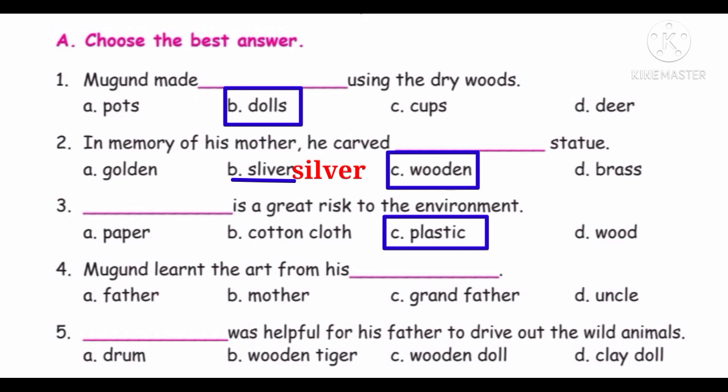Fourth question: Muhun learned the art from his dash. Options: Father, Mother, Grandfather, Uncle. Muhun learned the art from his grandfather — thata. The answer is grandfather. Muhun learned the art from his grandfather.